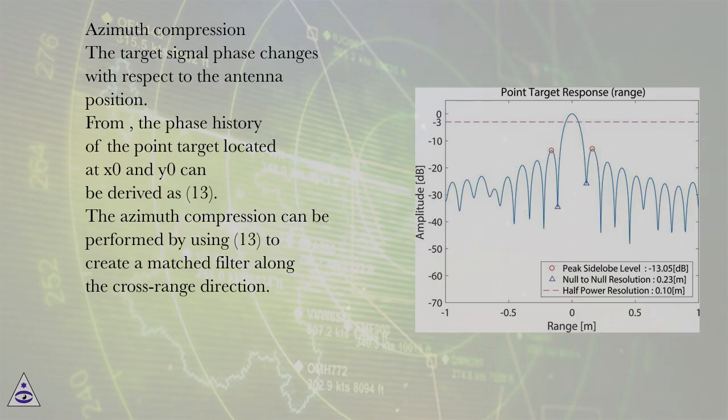Azimuth compression. The target signal phase changes with respect to the antenna position. From the phase history of the point target located at X0 and Y0 can be derived as (13). The azimuth compression can be performed by using (13) to create a matched filter along the cross-range direction.